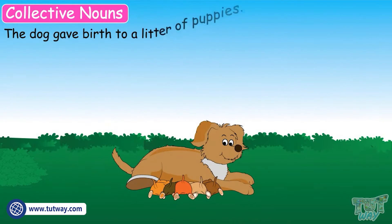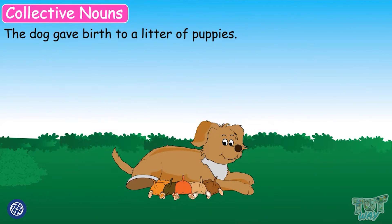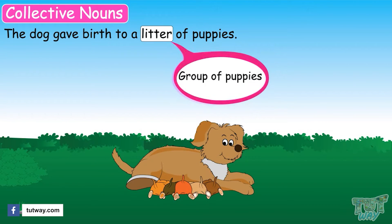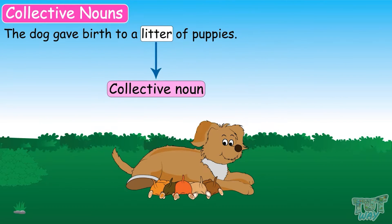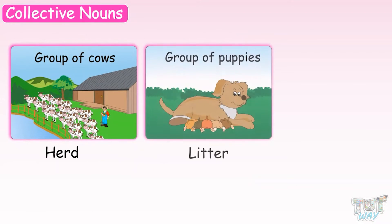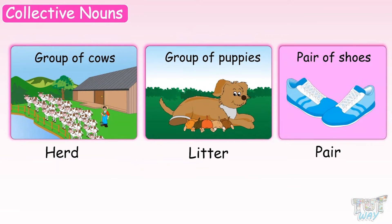The dog gave birth to a litter of puppies. Here, the word litter refers to a group of puppies, that is, more than one puppy. So the word litter is a collective noun. Such words as herd or litter, which represent a group or collection of the same kind of persons, animals, or things, are called collective nouns.